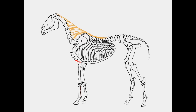Superficial pectoral and deep pectoral, subclavius, supraspinatus, infraspinatus, deltoideus muscle, teres minor, subscapularis, coracobrachialis, and teres major.